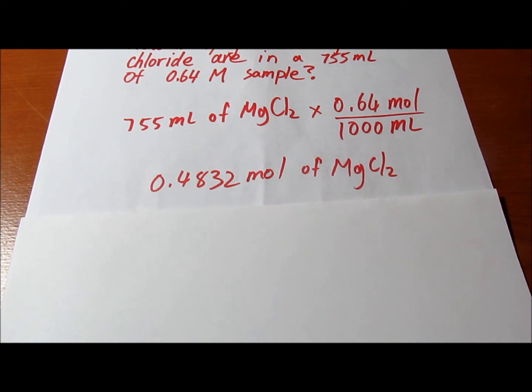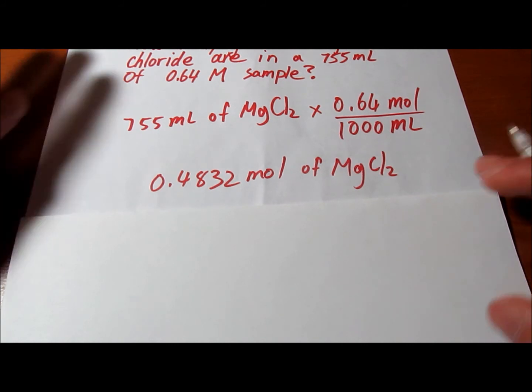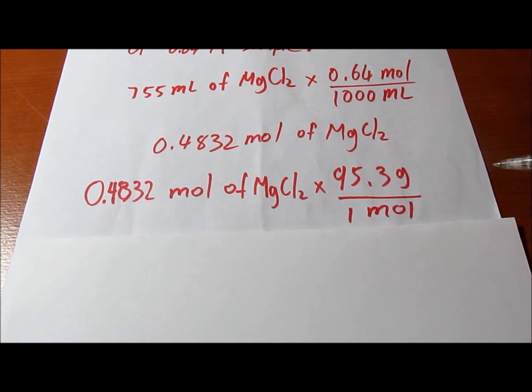Next we would find the molar mass of magnesium chloride which is 95.3 grams.